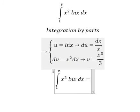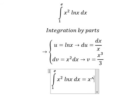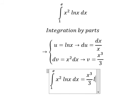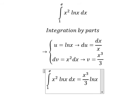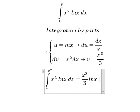Using the integration by parts formula, u times v gives us x³ over 3 times ln(x), and we have the bounds from 1 to e.